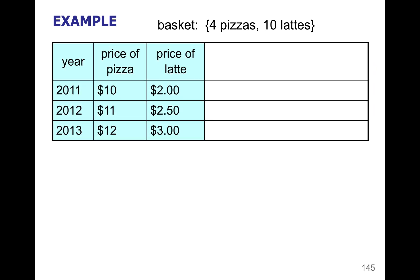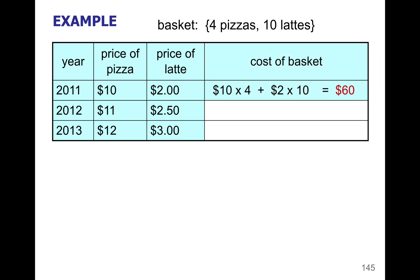Now for each of the three years here — 2011, 2012, and 2013 — these are the various prices of pizza and lattes. To find the market basket cost of each year, we multiply price times quantity for each item and add them together. The cost of the market basket for 2011 is $60, then $69, and then $78.